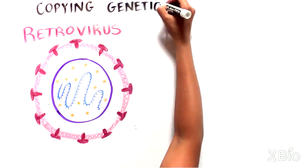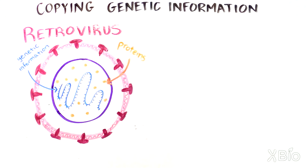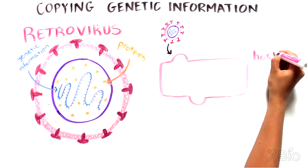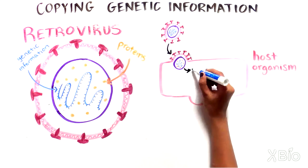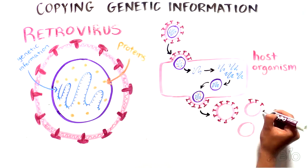Retroviruses are small particles that consist of genetic information and a few proteins inside a capsule. These viruses need to be inside the cell of another host organism to replicate. Once inside, viruses copy their genetic material to form many more viruses.